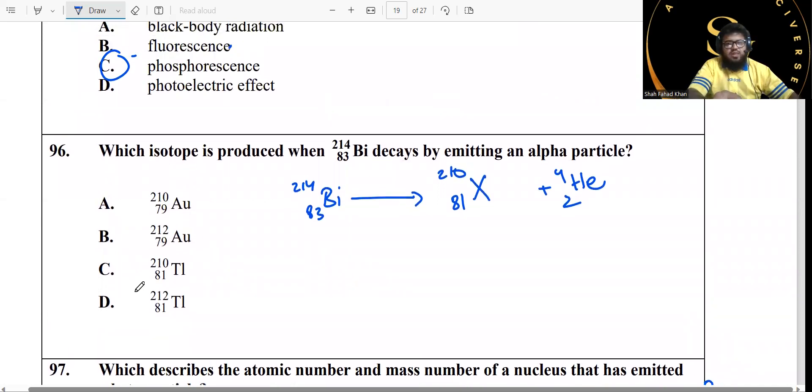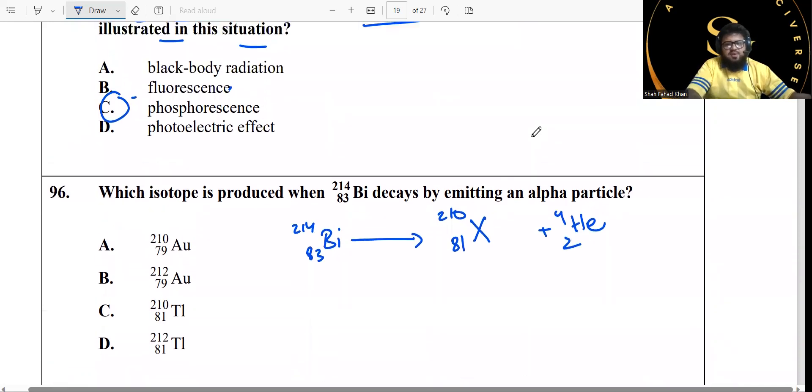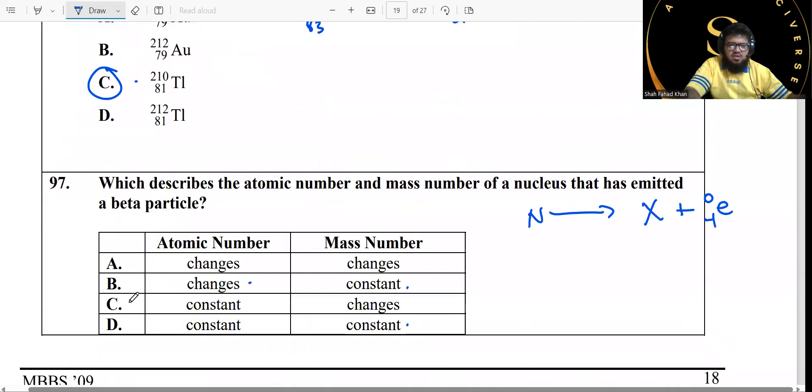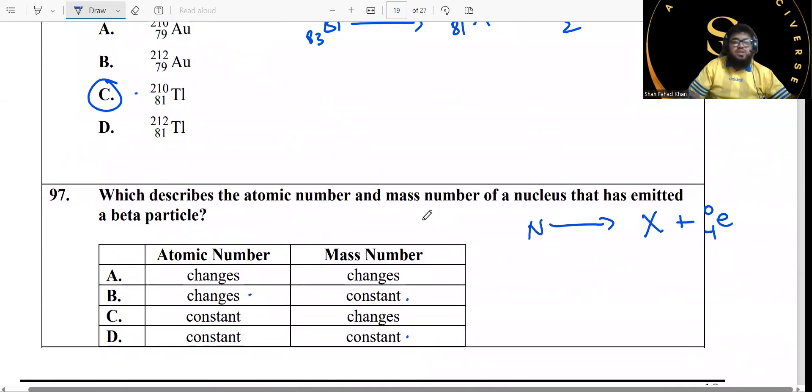Which isotope is produced when this much decays by emitting an alpha particle? Now we need this much and it's decaying by emitting out an alpha particle. All you need to do is just subtract the 4 from this mass, which is 2, will be left with 210, and subtract the 2 from 83, we are going to be left with 81. So this is the element with 81 and 210.